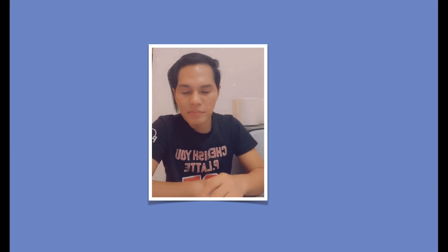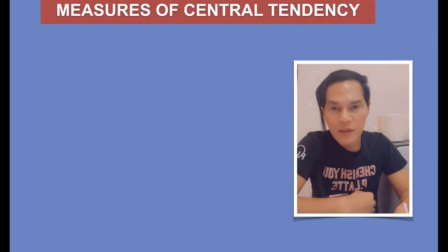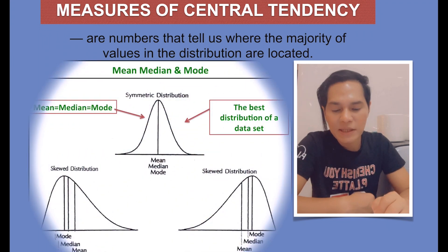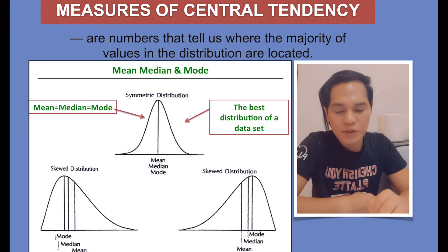When we talk about mean, median, and mode, these are actually measures of central tendency, which means these are numbers that tell us where the majority of values in the distribution are located. Look at this illustration here. This is an example of a symmetric distribution where the mean, median, and mode are equal to each other, and this is the best distribution of a data set.